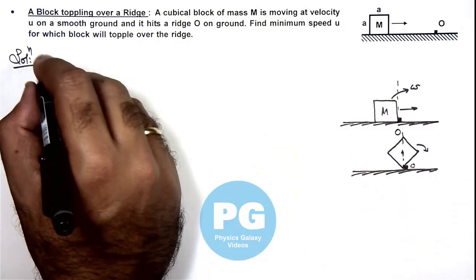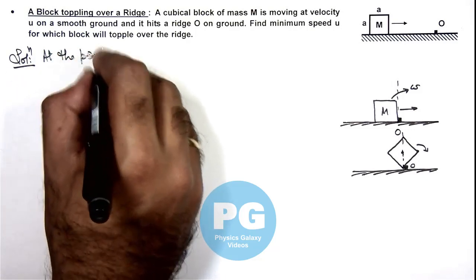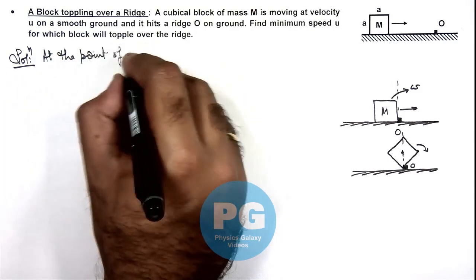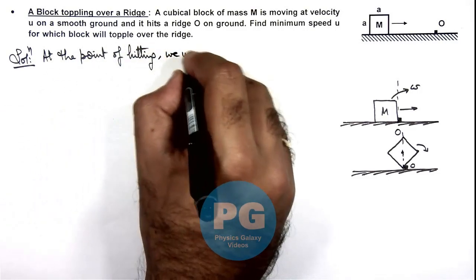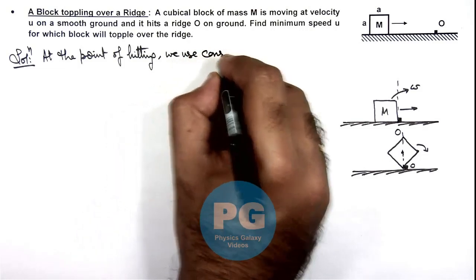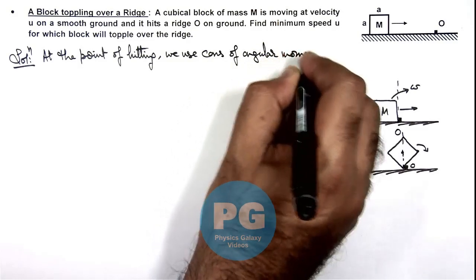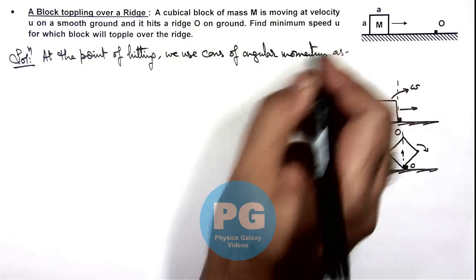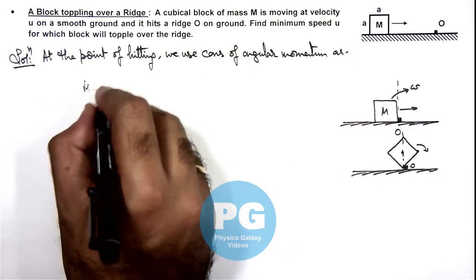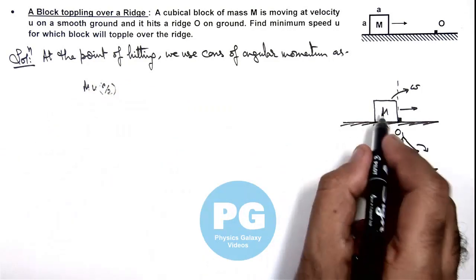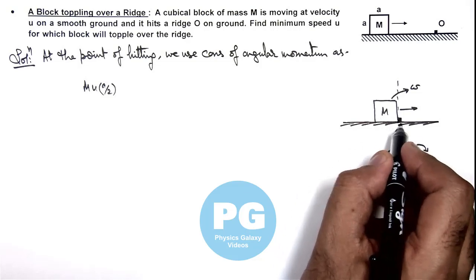Here we can write, at the point of hitting, we use conservation of angular momentum. Here we can write M u multiplied by a/2 was initial angular momentum of the block about this ridge.